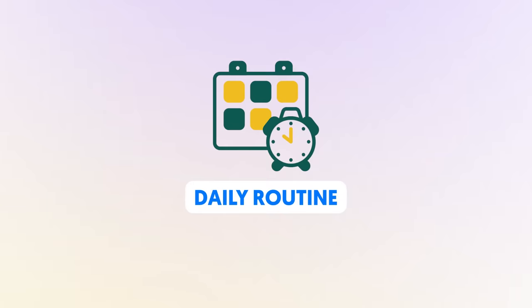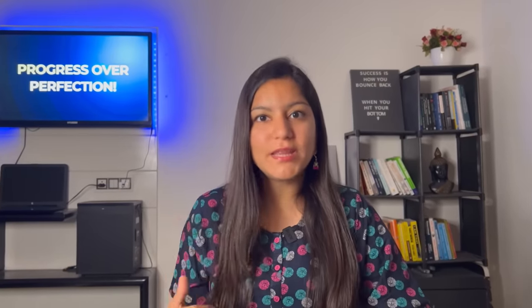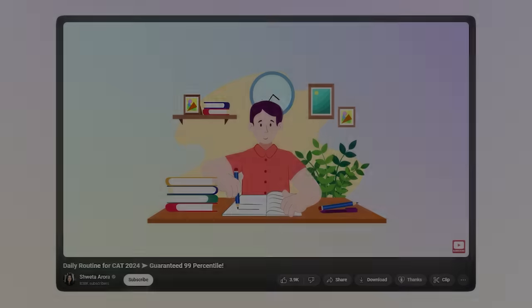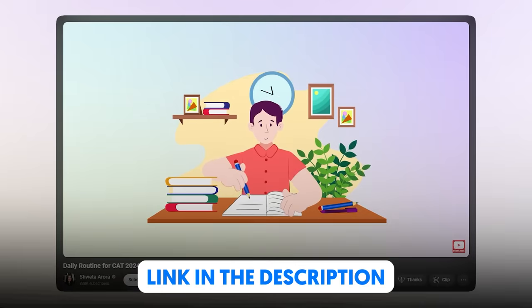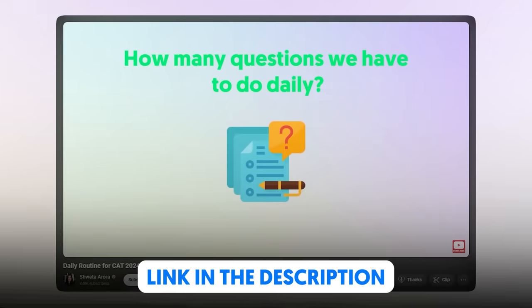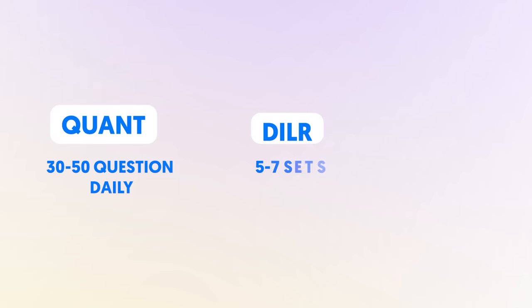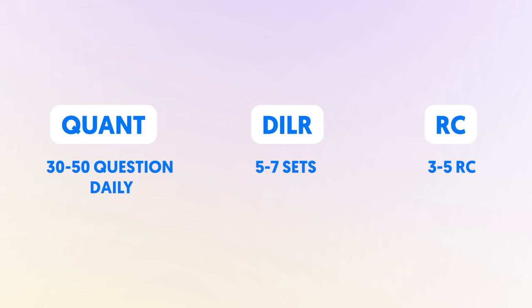Once your material is finalized, you have a daily routine to complete the syllabus every day. It doesn't have a fixed number — it depends on your own capability. As a reference point: QUANT is 30 to 50 questions daily, DILR is 5 to 7 sets, and RC is 3 to 5 RCs. Whether you take three sections in one day or two sections, that is entirely your choice.